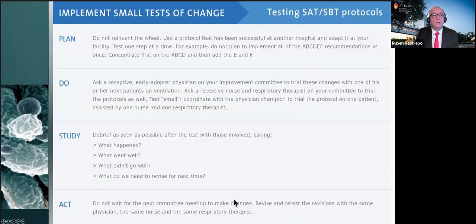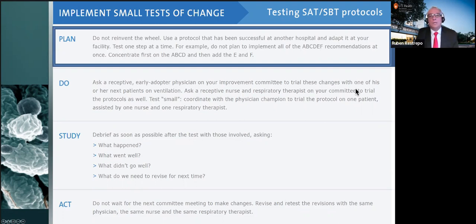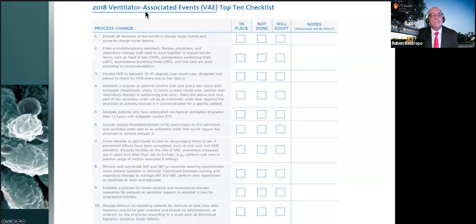Plan, do, study, and act. When you plan, do not reinvent the wheel. There are so many good existing examples to copy and implement, rather than trying to create or design something new. There are sources like the 2018 latest event top 10 checklist — with columns for 'in place,' 'not done,' 'will adopt,' and 'notes.'